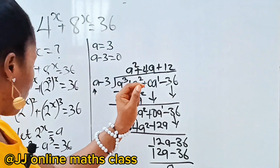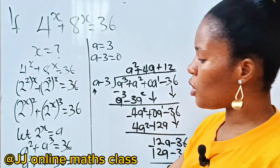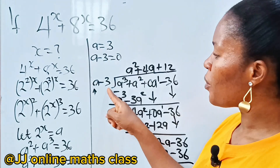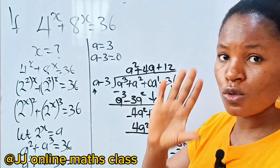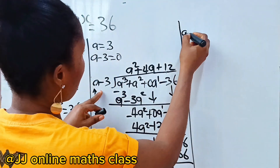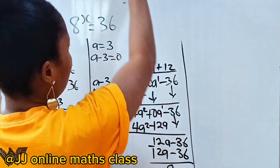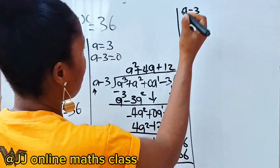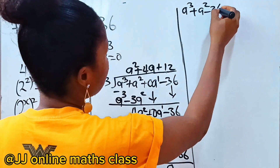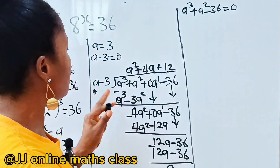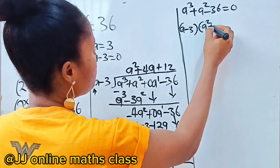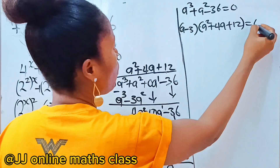The long division is complete with remainder 0. So the cubic polynomial a³ + a² - 36 = 0 can be expressed as (a - 3)(a² + 4a + 12) = 0.